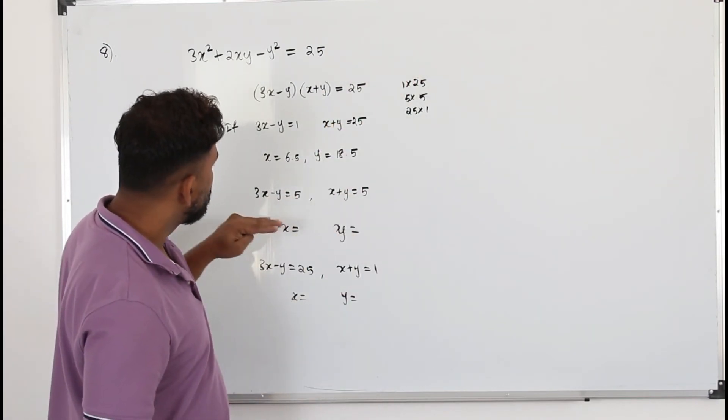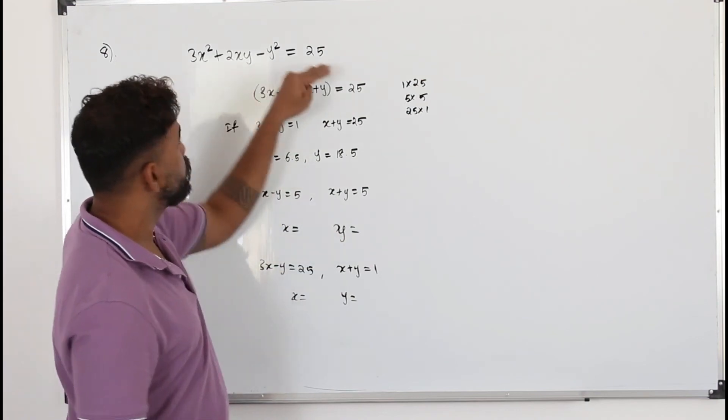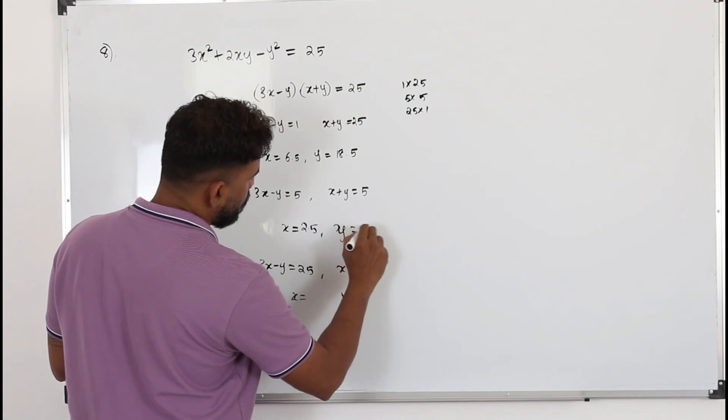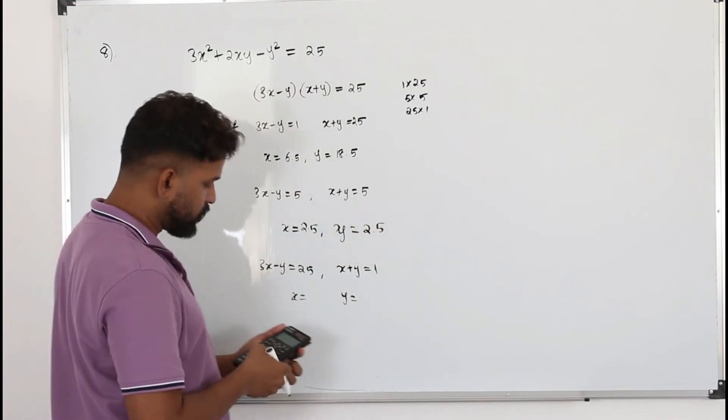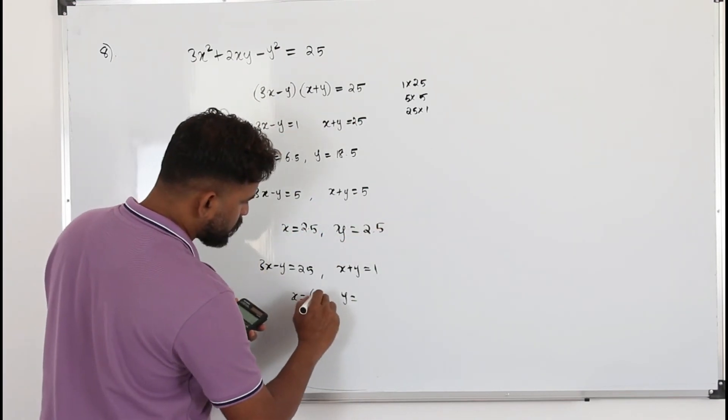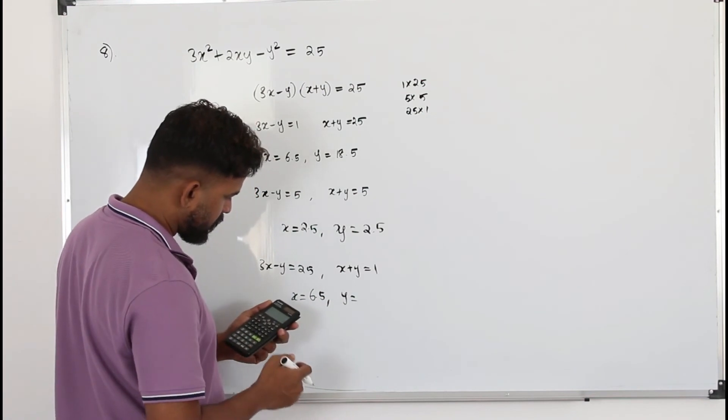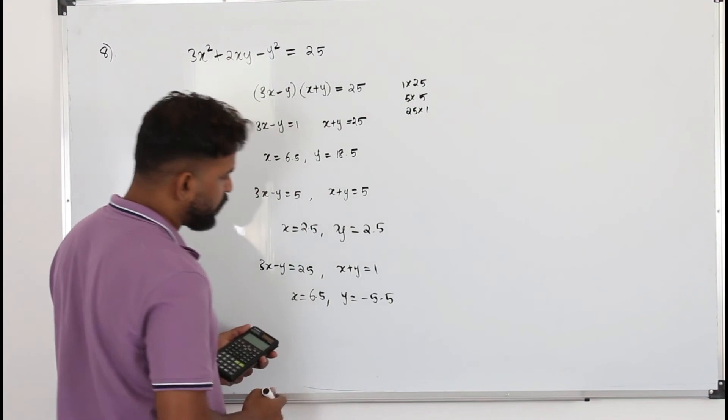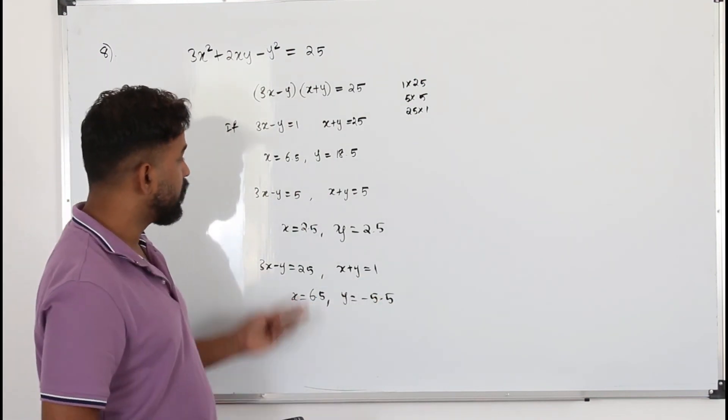So we can straight away say there are no integers x and y that satisfy this equation. Here it's 5 over 2 and 5 over 2. They are not integers. 13 over 2, 6.5, and minus 11 over 2, minus 5.5. These are all not integers.